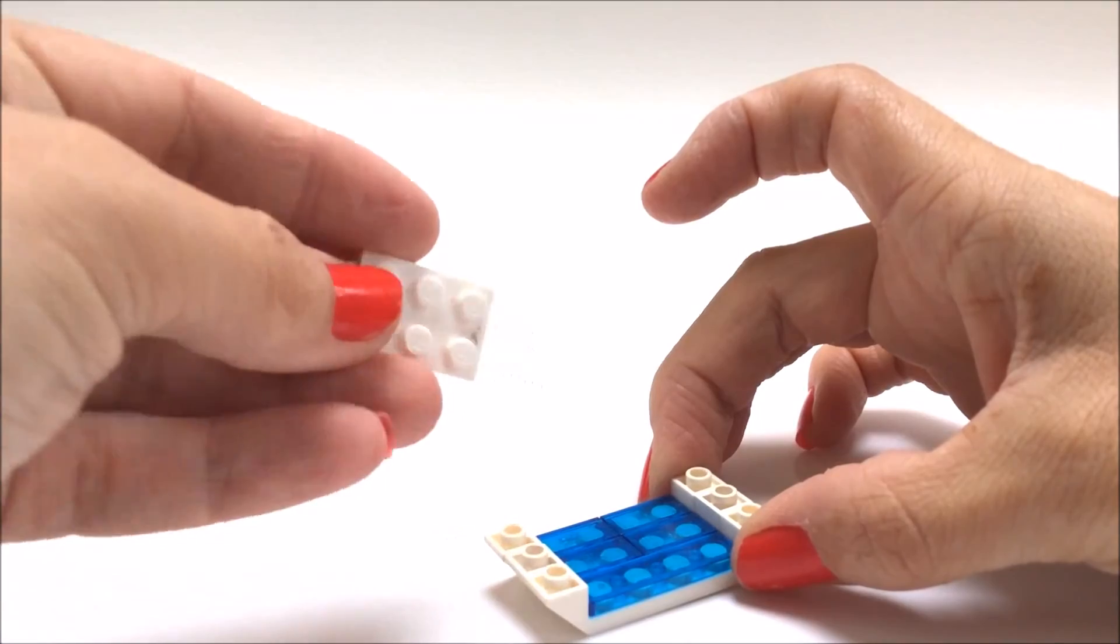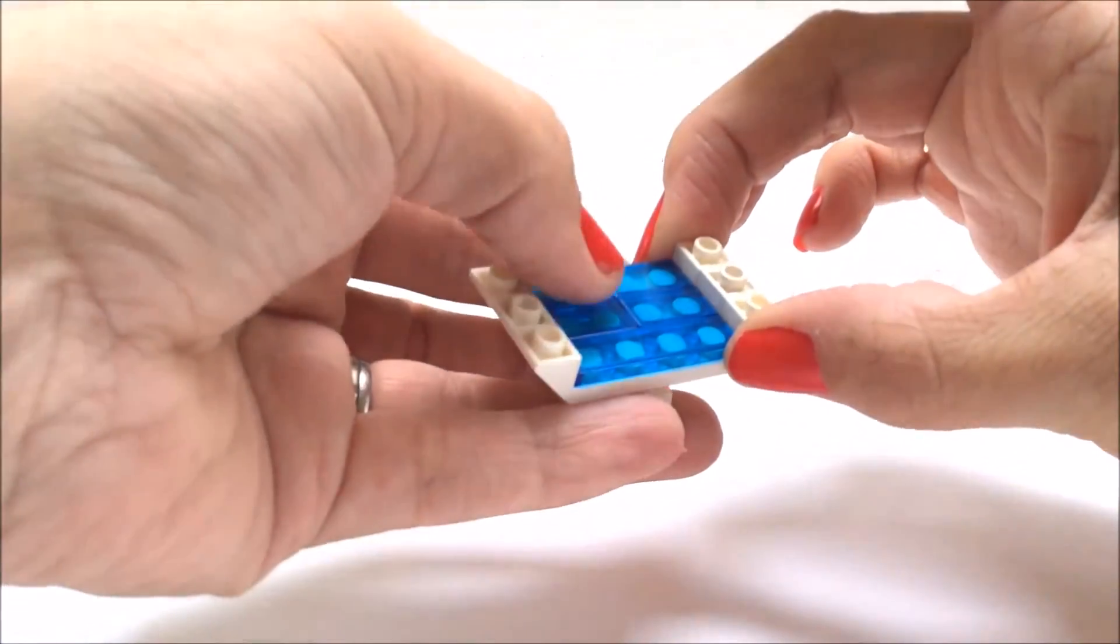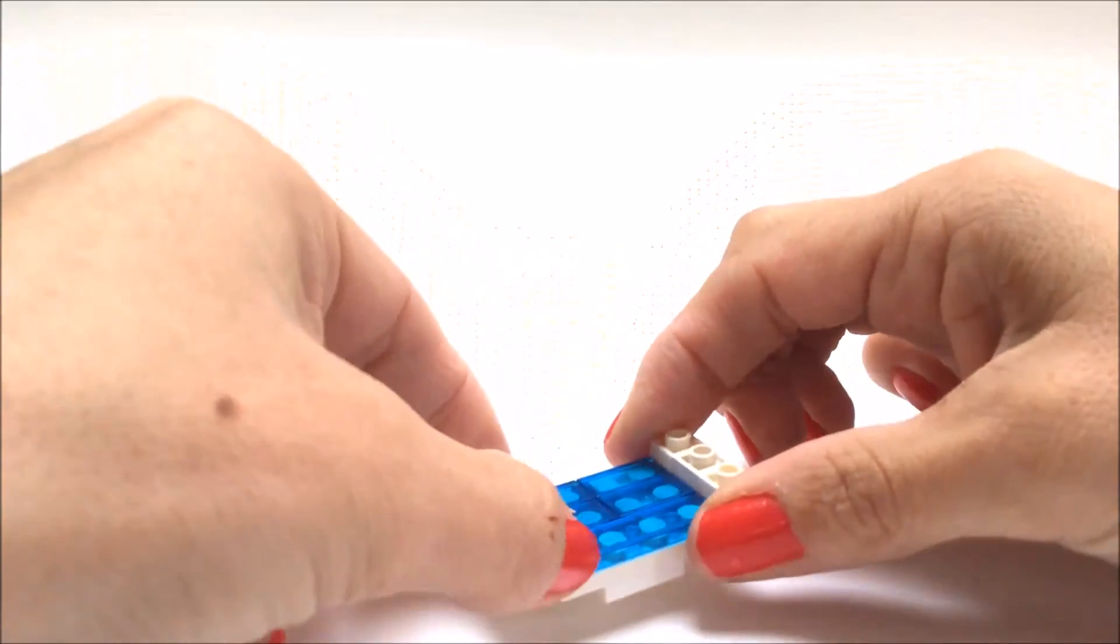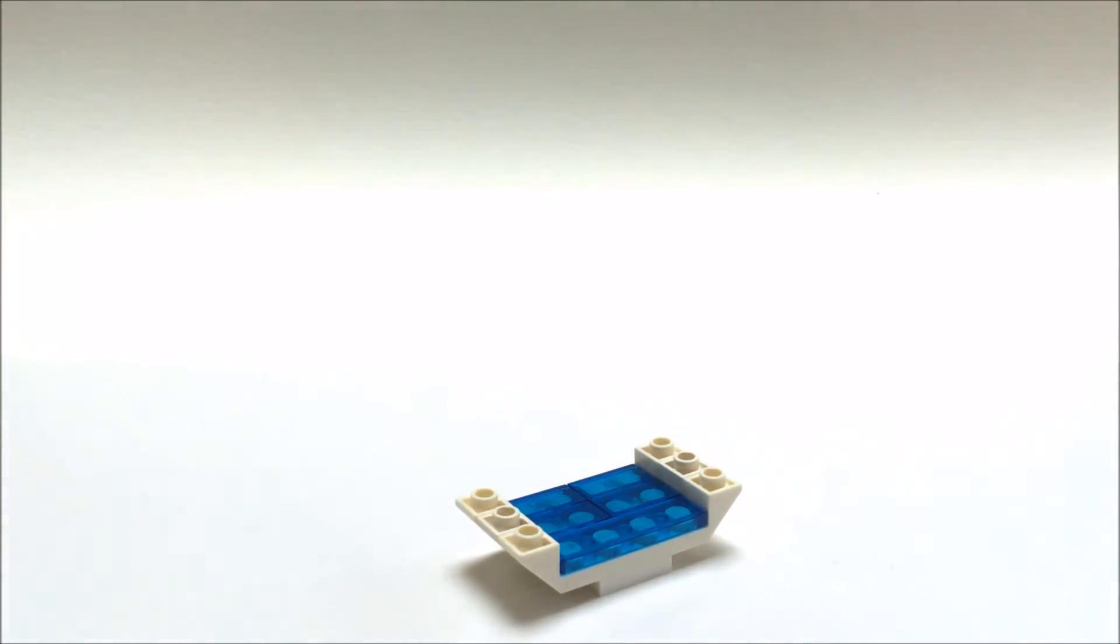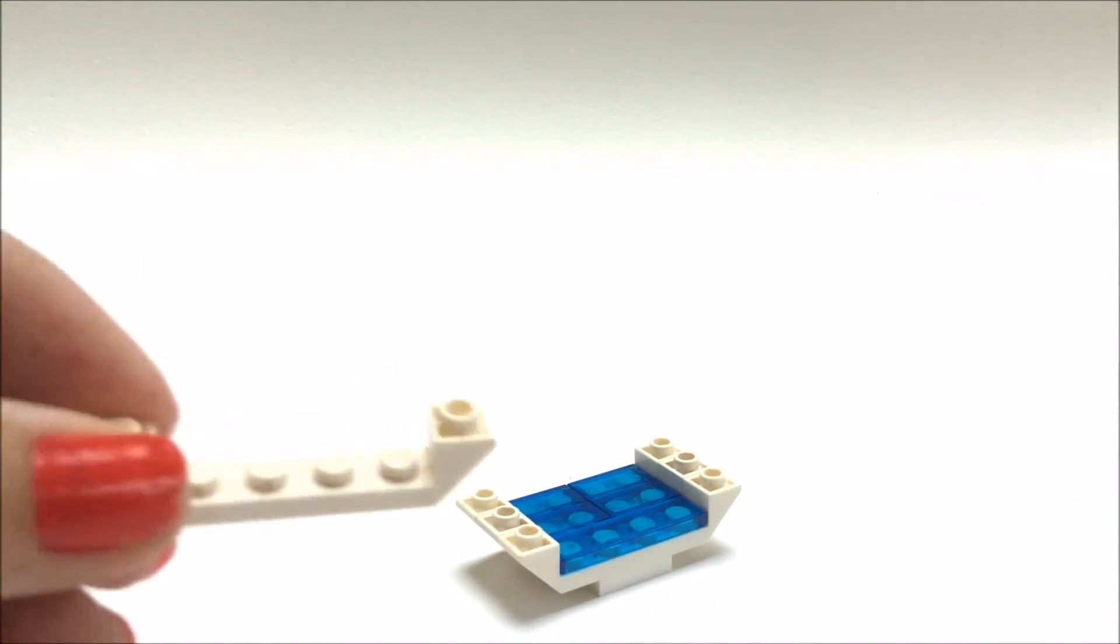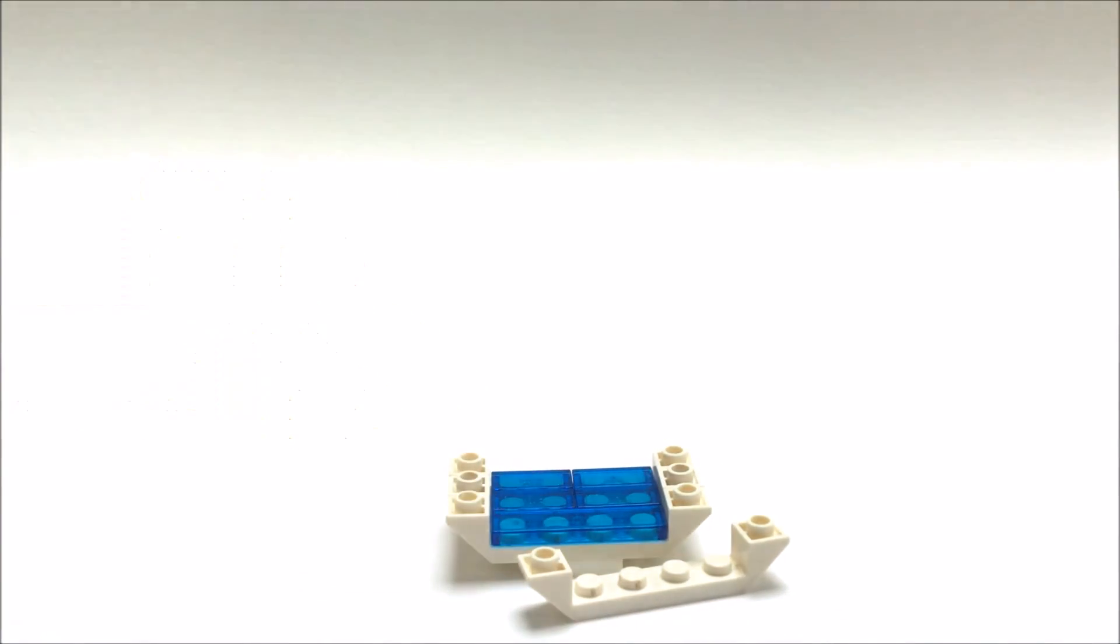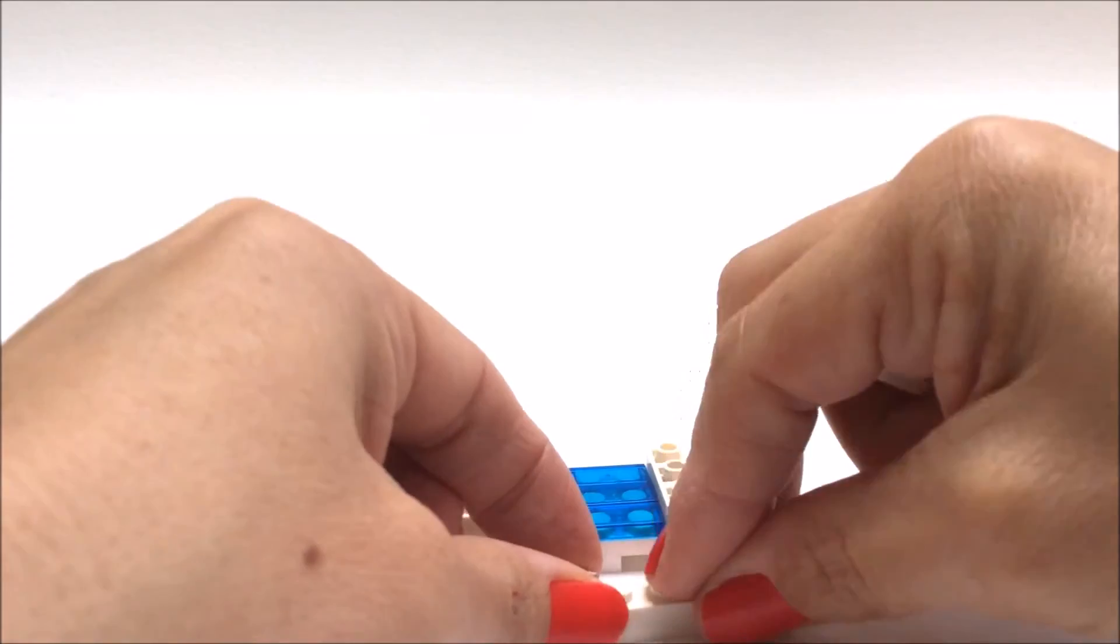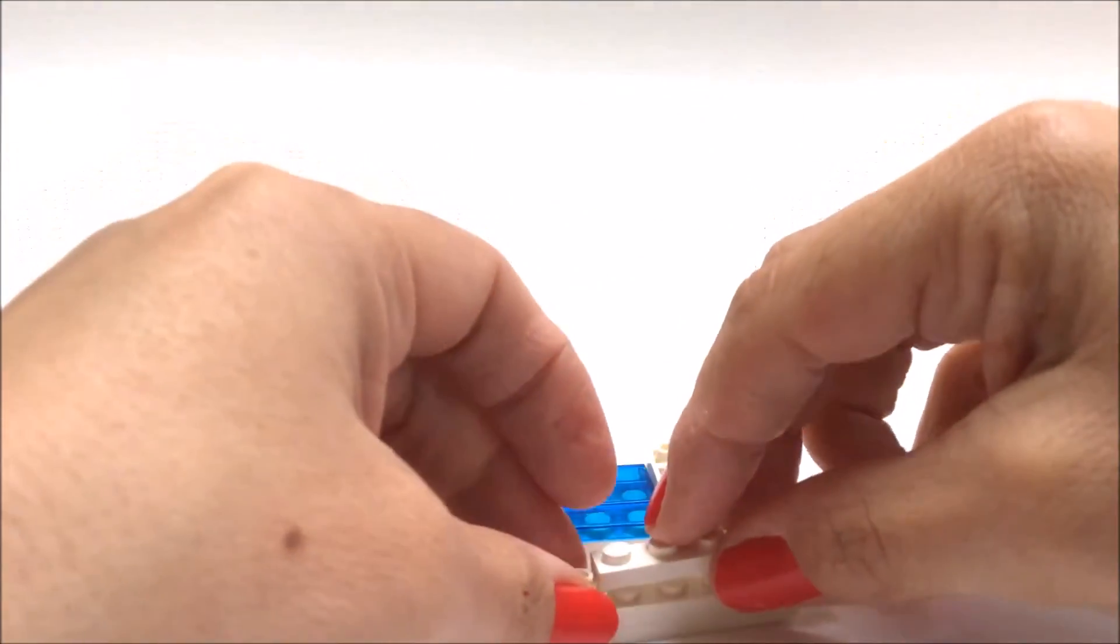Underneath we're going to put a two by three brick to hold these together. For the front edge of the bath we're going to use another one of these and attach two four by one bricks to create the bath wall side of the bath.